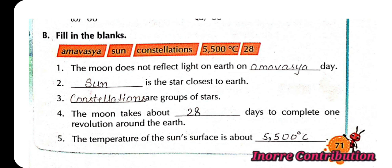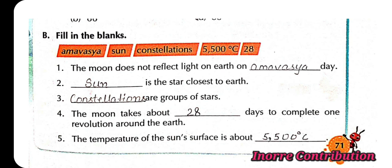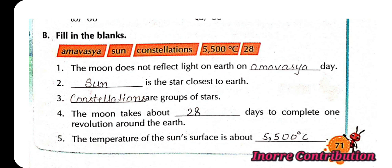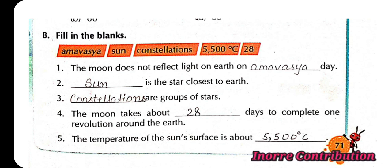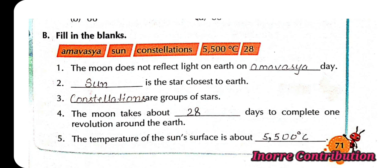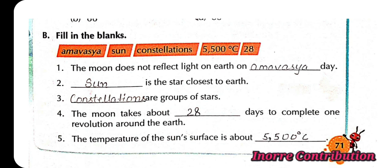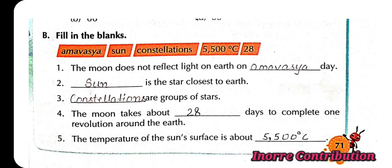Fill in the blanks. First, the moon does not reflect light on Earth on Amavasya Day. Second, Sun is the star closest to Earth. Third, constellations are group of stars. Fourth, the moon takes about 28 days to complete one revolution around the Earth. Fifth, the temperature of the sun's surface is about 5,500 degree Celsius.